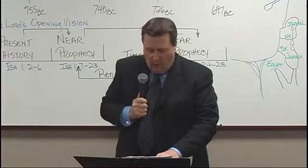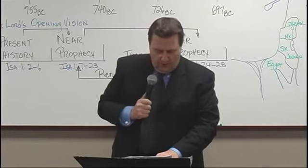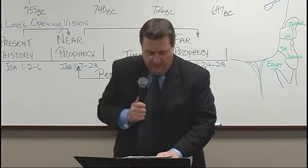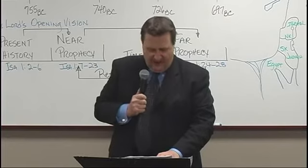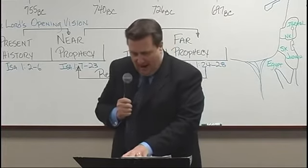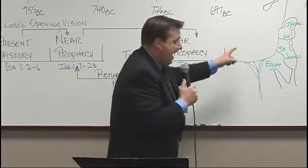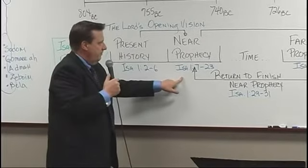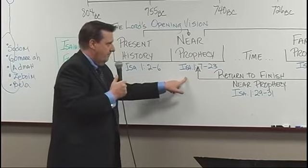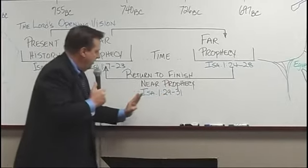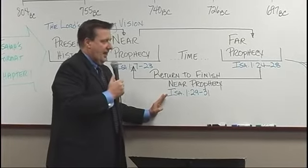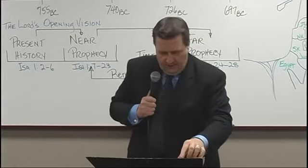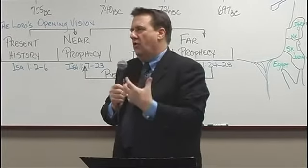The Lord will bring judgment on the makers of idols, and no one can save them. This near prophecy is about to happen. Isaiah's message returns — it's about to come true. And we see that same format all the way through every group of stories the Lord is bringing us: present, near prophecy, far prophecy, near prophecy again. We will see that same format all the way through the book of Isaiah so we know what the Lord is saying to us.